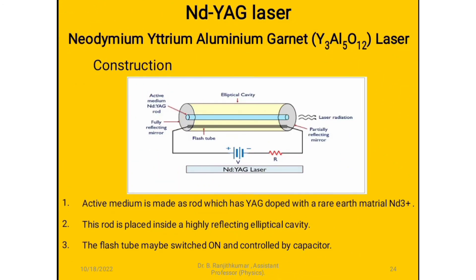Construction: The active medium is made as a rod of Yttrium Aluminium Garnet doped with the rare earth material Nd³⁺ ions. This rod is placed inside a highly reflecting elliptical cavity. The flash tube may be switched on and controlled by the capacitor.